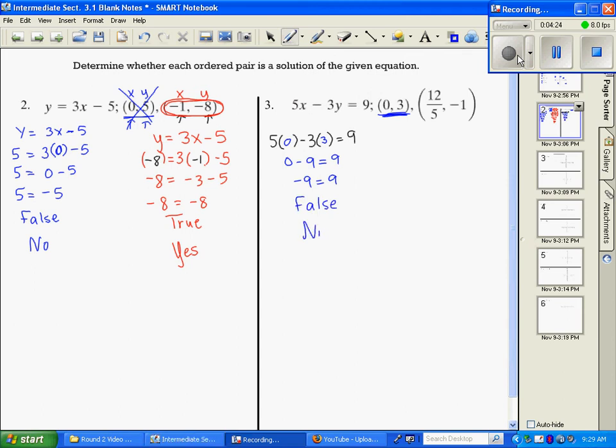So no, it is not a solution to this equation. So I'm going to start over, take my original equation where x and y are at. I'm going to substitute these values. So I have 12/5 for x, and I have -1 for y. When I simplify fractions, when you multiply, you can cross cancel, and divide a 5 out of each. So I just have 12 + 3 = 9. 15 = 9. That's also a false statement. So no, this is not a solution. So neither one of the ordered pairs are solutions in number 3.